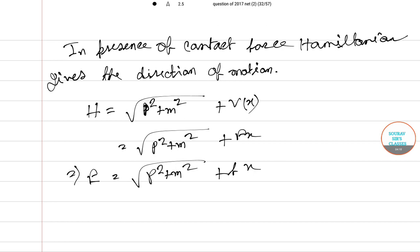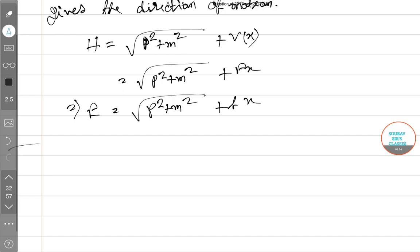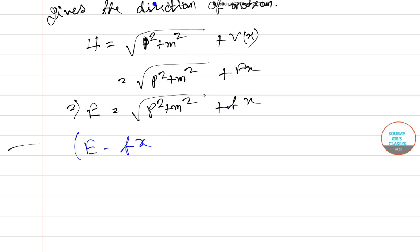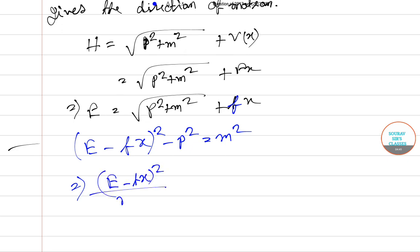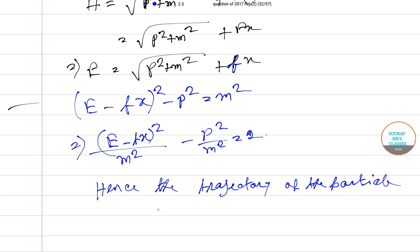Solving this equation, we can write (E minus Fx) squared minus P squared equals M squared. Rearranging, this gives (E minus Fx) squared over M squared minus P squared over M squared equals 1. Hence the trajectory of the particle in phase space is a hyperbola.